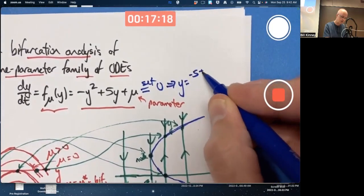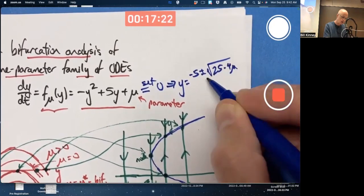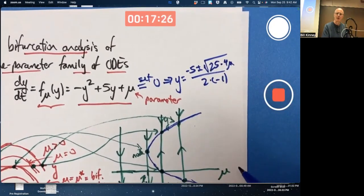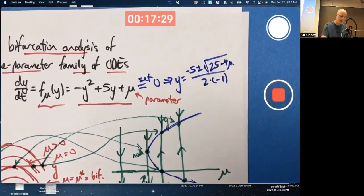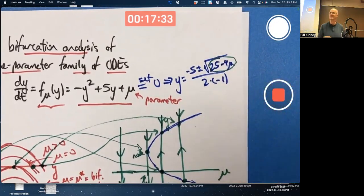Negative five plus or minus square root of 25 minus four mu over two times negative one is what the quadratic formula gives. The bifurcation value is the value of mu that makes the thing under the square root zero because that's where we're going to go from imaginary numbers for equilibrium points to real numbers.